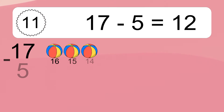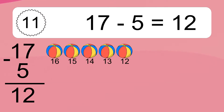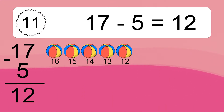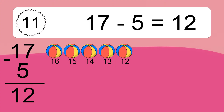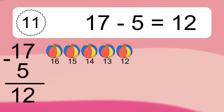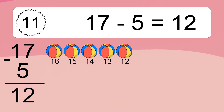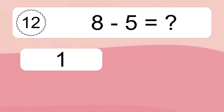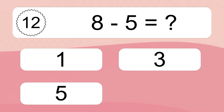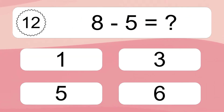15 minus 11 equals 4. Let's count it: 14, 13, 12, 11, 10, 9, 8, 7, 6, 5, 4. 17 minus 5 equals what?